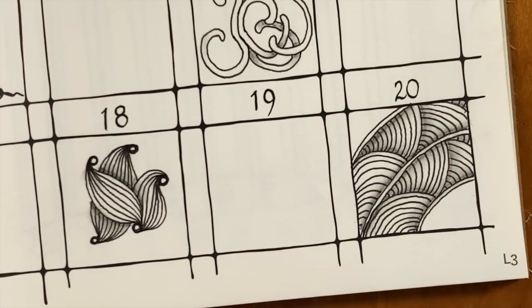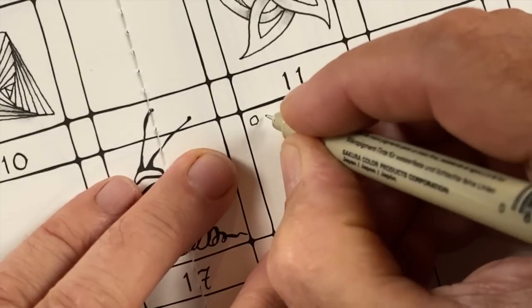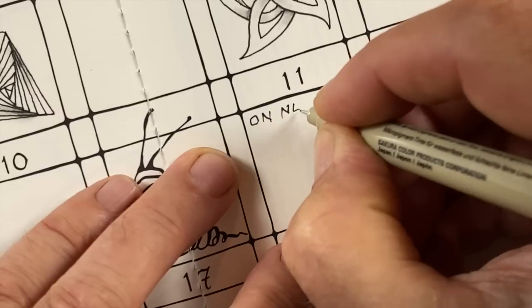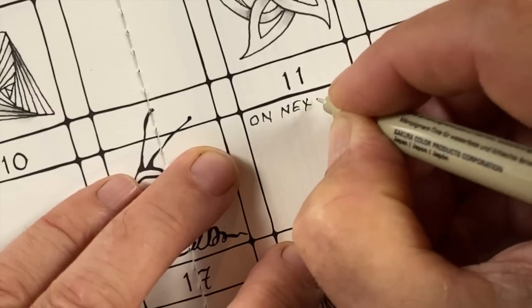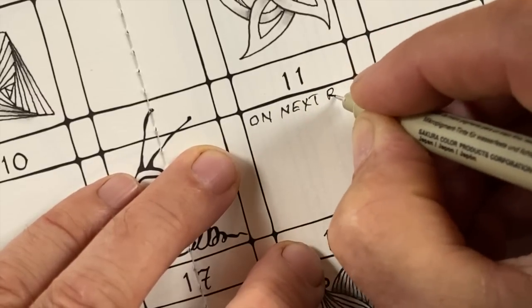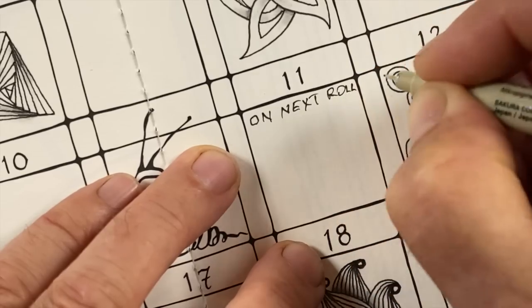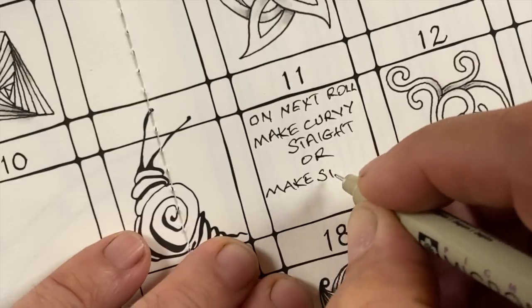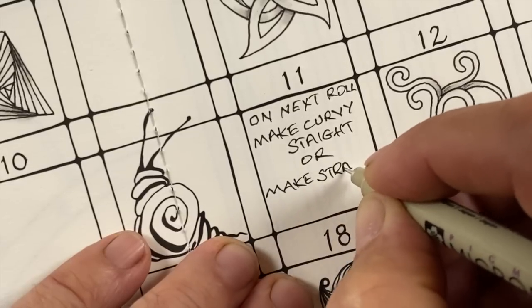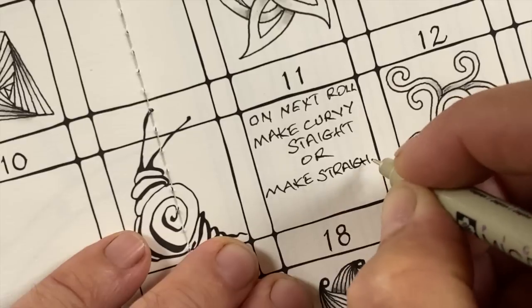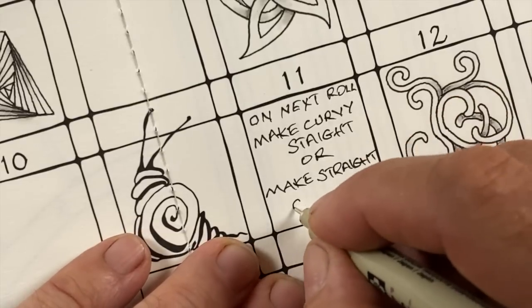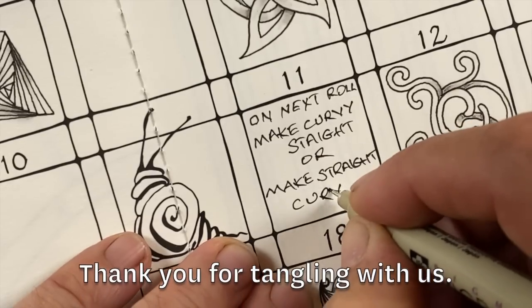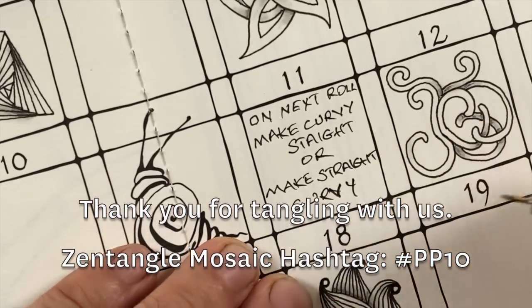And I like that idea so much that one of the things you can do with this booklet, with this legend, is pick one of the sections that your die might take you to and pick an instruction. So in this case, I'm going to say, on the next roll, make the curvy tangle with straight lines or make the straight tangle with curvy lines. So it gives you an option to play with that.